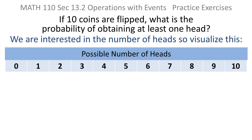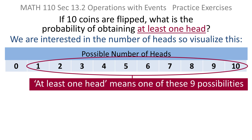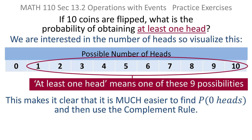So if you think about it that way, when they're asking us the probability of obtaining at least one head, they're asking for all of those cases — one, two, three, all the way up to even ten heads. I hope that makes it obvious that it's much easier to just find the probability that you don't get any heads and use the complement rule.